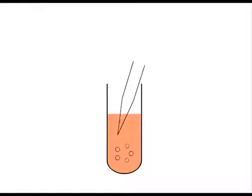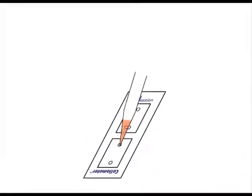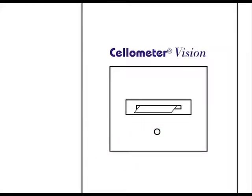To perform a cellometer calcium-AM-PI assay, load stained cells into a counting chamber. Insert the chamber into cellometer.